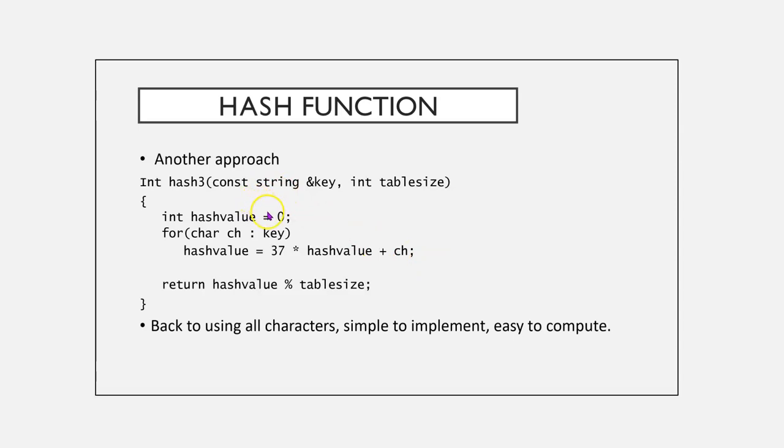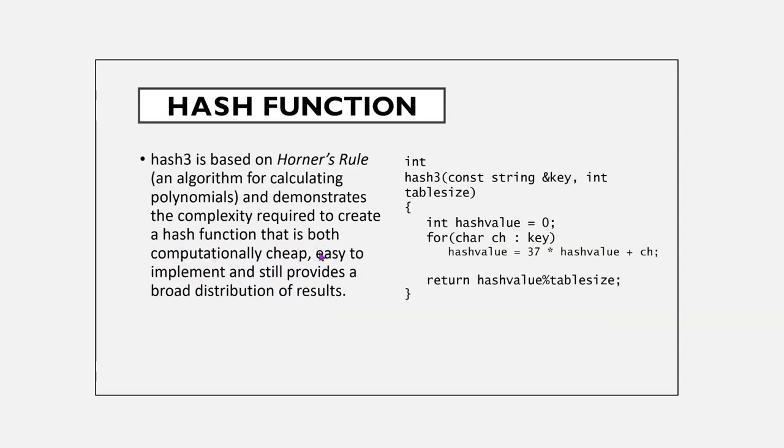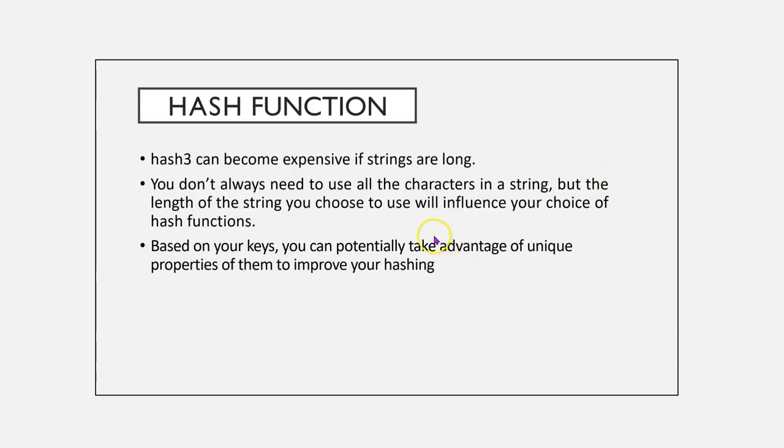Another approach, we could multiply and add it to the previous value. And we use all the characters, it's simple to compute. And it's based on something called Horner's Rule, which is an algorithm for calculating polynomials, and demonstrates the complexity required to create a hash function that is both computationally cheap, easy to implement, and distribute much better. However, if the strings are long, hash three can be rather expensive. You do not always need to use all the characters, but the length of the string you choose to use will influence your choice of hashing functions.